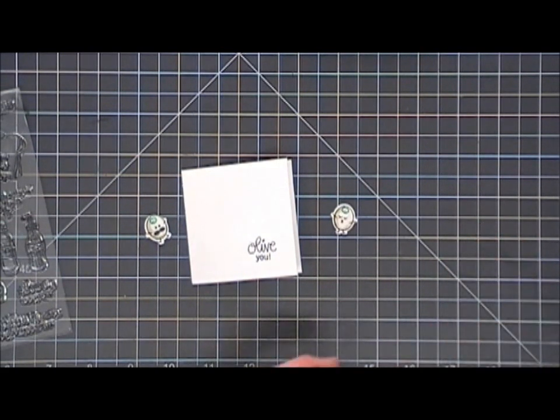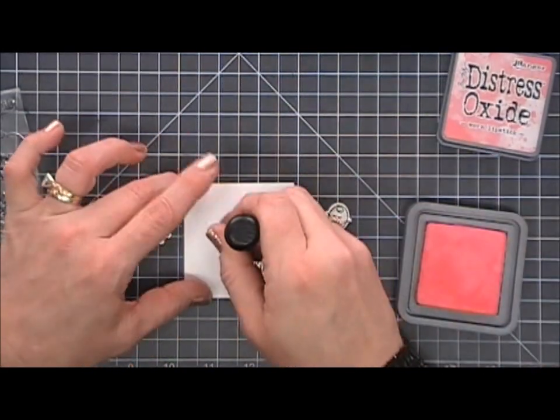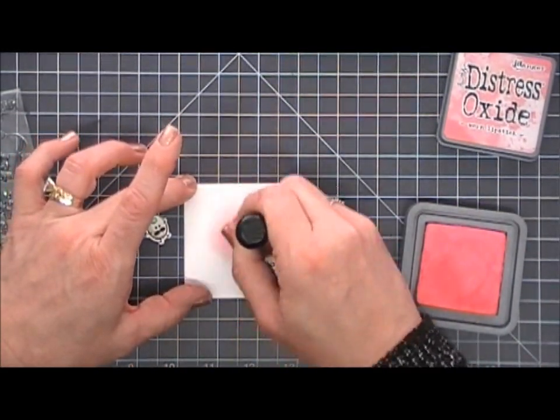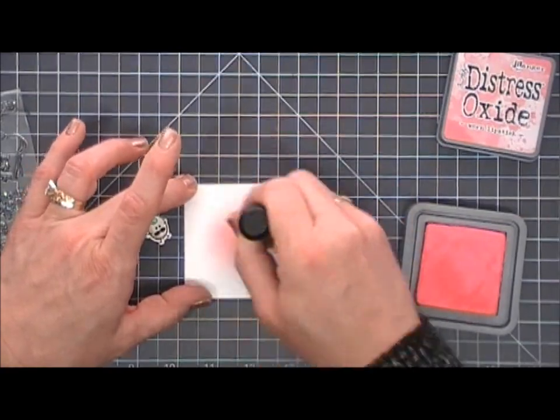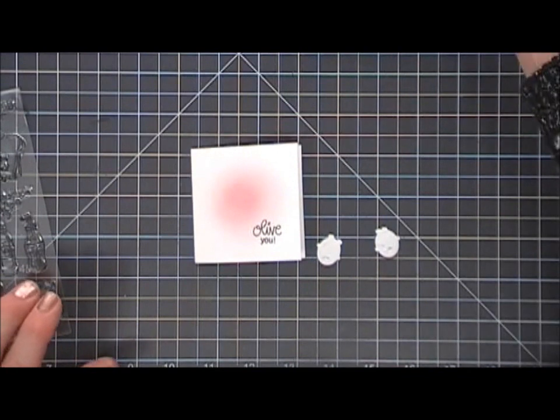But I stamped the sentiment that says 'olive you,' which is the cutest, and then I thought it needed a little bit of color in the background. So I'm going to go in with my distress oxides and just using my blending tool add just a little bit of color in that background, kind of overlapping on the sentiment.